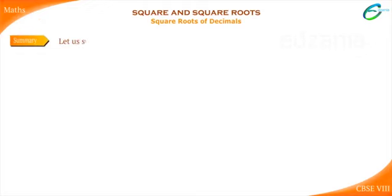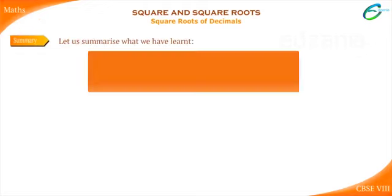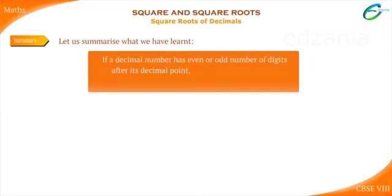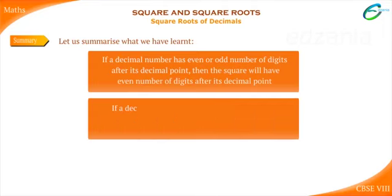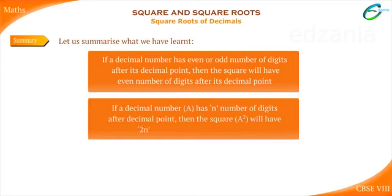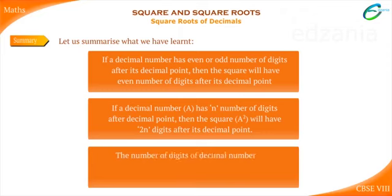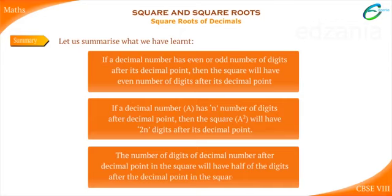Summary: If a decimal number has an even or odd number of digits after its decimal point, then the square will have an even number of digits after its decimal point. If a decimal number A has n digits after the decimal point, then A² will have 2n digits after its decimal point. The square root value will have half of the digits after the decimal point compared to the original square number.